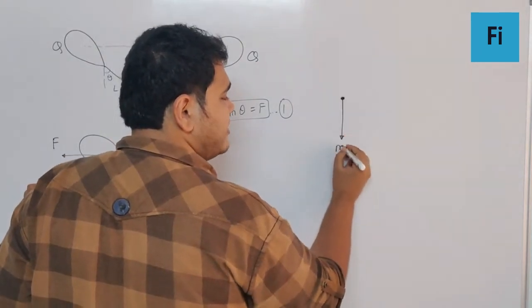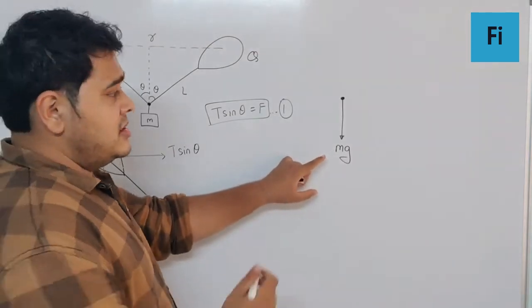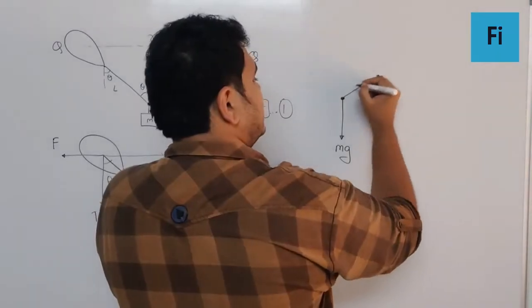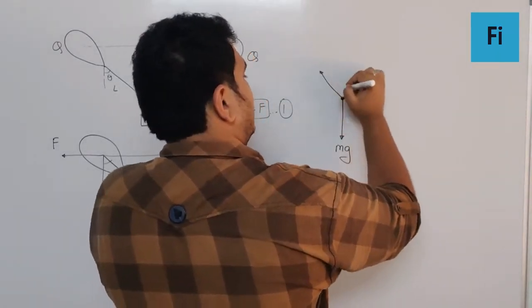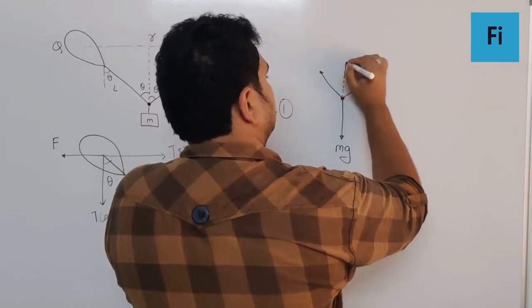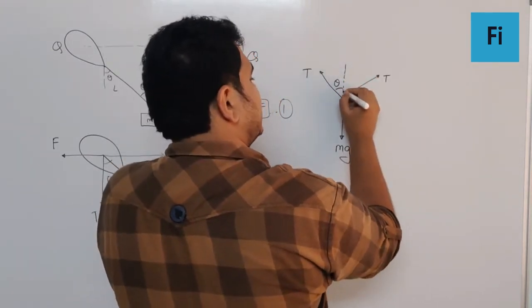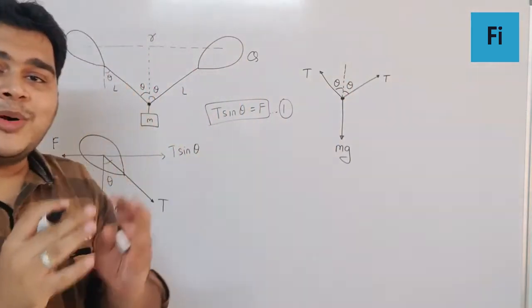There is a tension on this side and tension on this side. Both tensions must be equal since they make equal angles with the vertical.